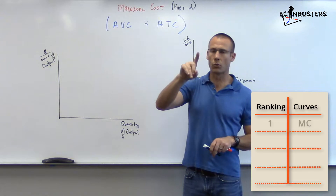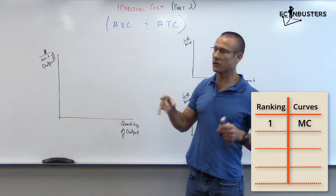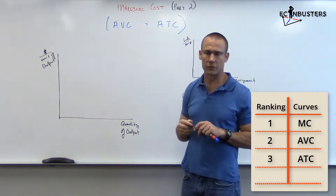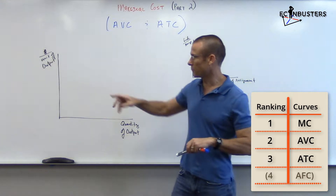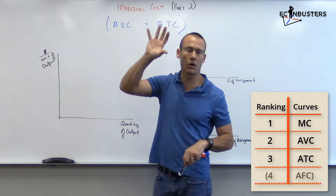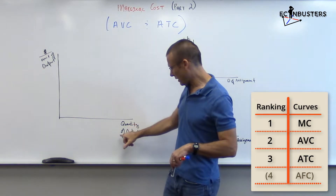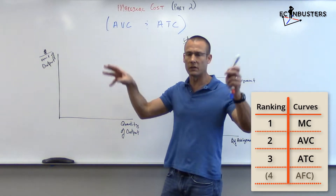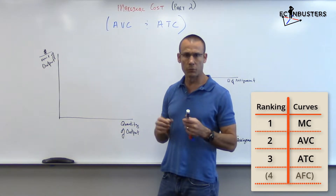Look at the name: marginal cost - that's our most important cost curve. Average variable cost is the second most important, and average total cost is the third. All three are measured in dollars per unit of output, and quantity of output goes on the horizontal axis, just like we've seen throughout micro.